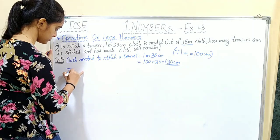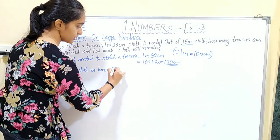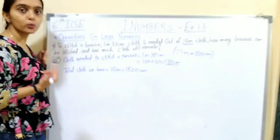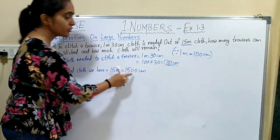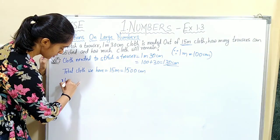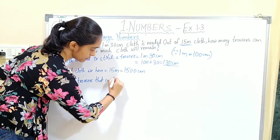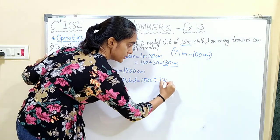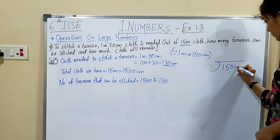Total cloth available is 15 meters, which equals 1,500 centimeters. To find how many trousers can be stitched, we divide the total cloth by the cloth needed per trouser. Number of trousers equals 1,500 divided by 130.